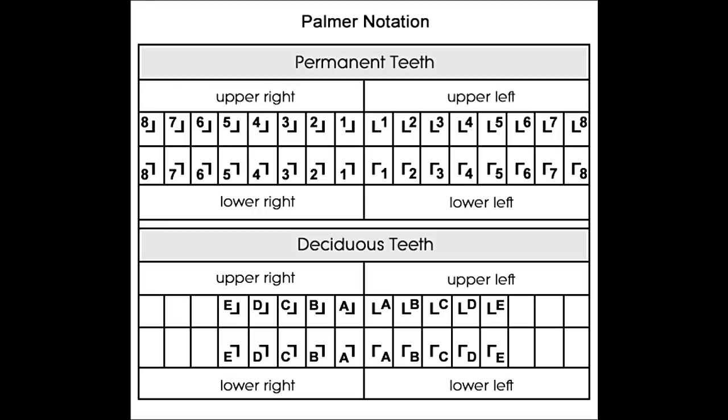Though the Palmer method was suggested for dental notation earlier in the United States, the American Dental Association adopted the universal numbering system, as it was easier to type due to the absence of symbols.